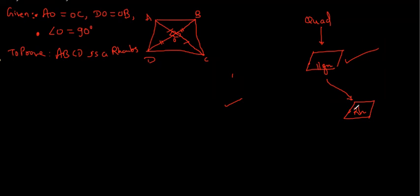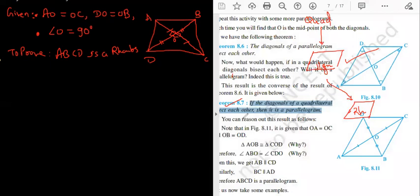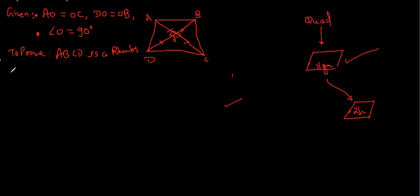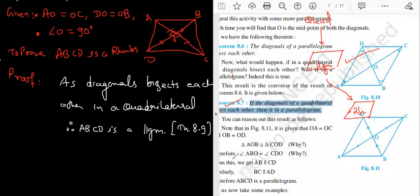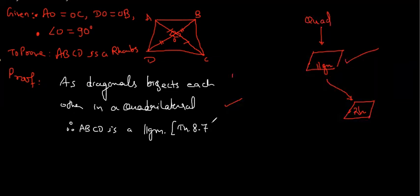Now from parallelogram we have to reach rhombus. That is the important thing. I can directly write theorem 8.9, proof: as diagonals bisect each other in a parallelogram, in a quadrilateral, therefore A, B, C, D is a parallelogram. Theorem 8.9. Is this thing clear? Sorry, 8.7. Any doubt in this? No sir.